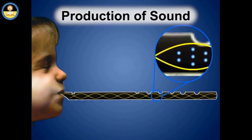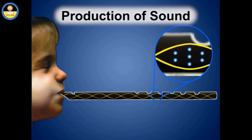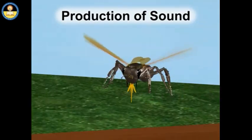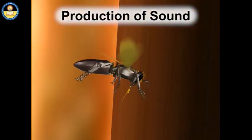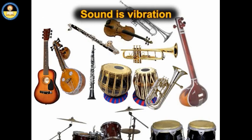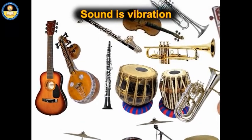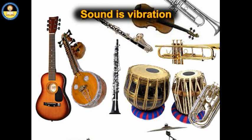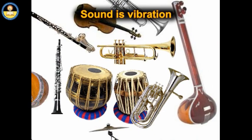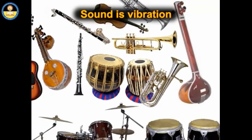In human beings, it is the vibration of the vocal chords that produces sound. When a bee flies nearby, we hear a humming sound — it is due to the vibration of the wings of the bee. A source of sound is always in a state of vibration. Most of the music is produced by the vibrating strings of various musical instruments and their vibrating air columns. In simple words, sound is vibration.